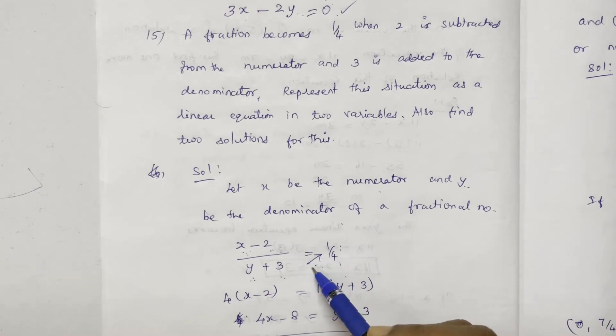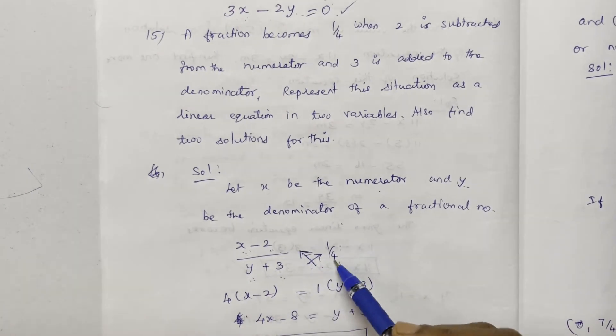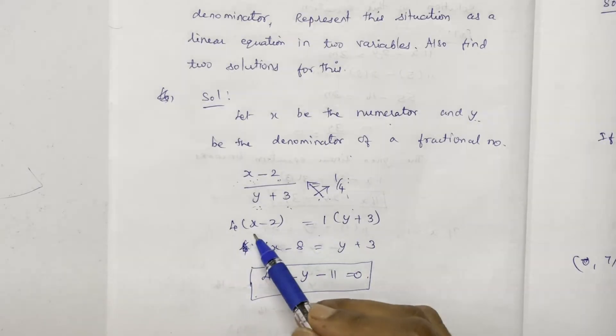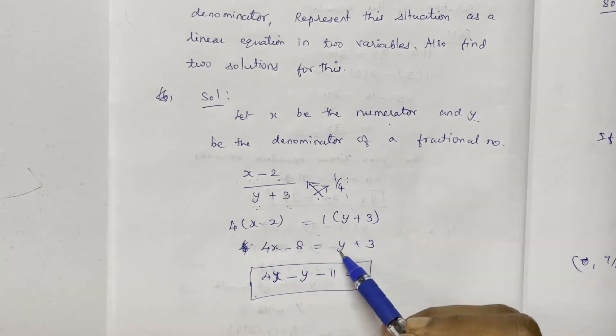If you have a cross multiplication, what do you have to do? 4 into x minus 2 equal to 1 into y plus 3. Multiply we have to do. 4x minus 8 equal to y plus 3.